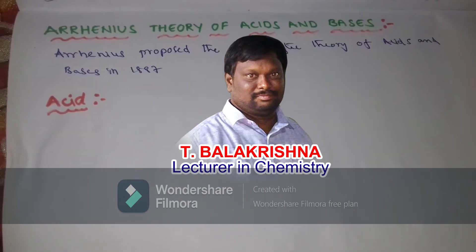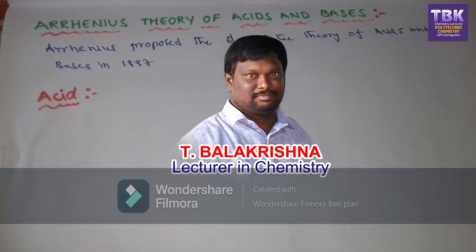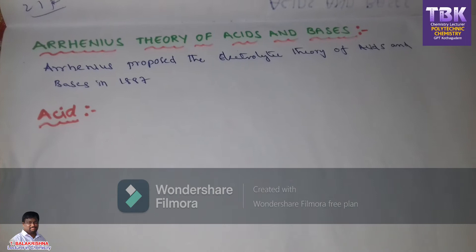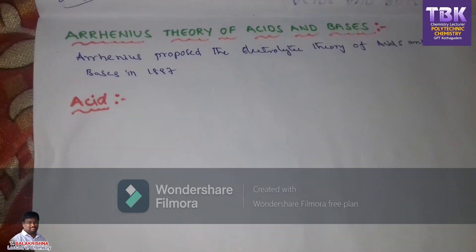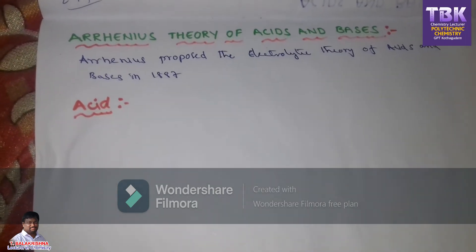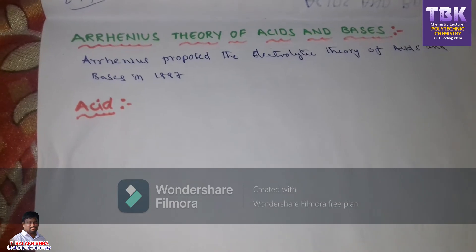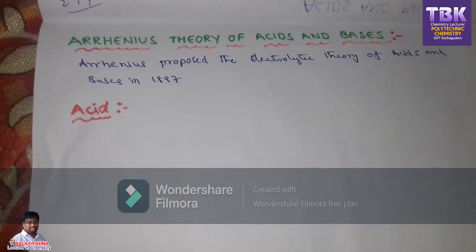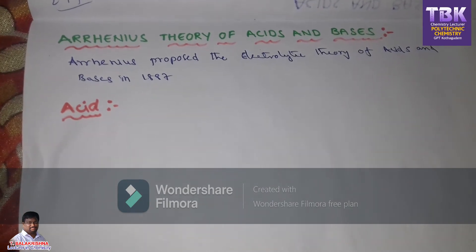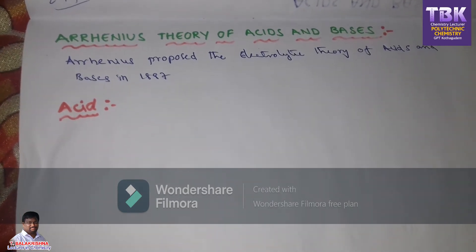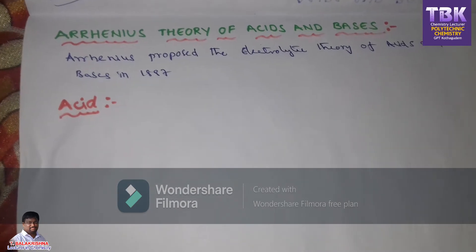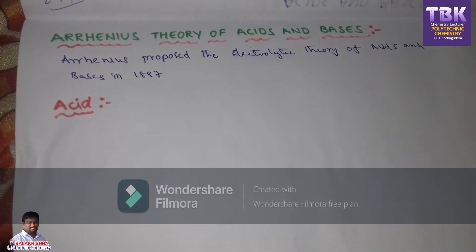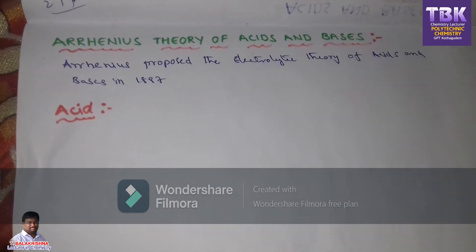Hi students, this is T. Balakrishna, chemistry lecturer, GPT Kutakudam. Today our topic is Arrhenius theory of acids and bases. Arrhenius proposed the electrolytic theory of acids and bases in 1887.